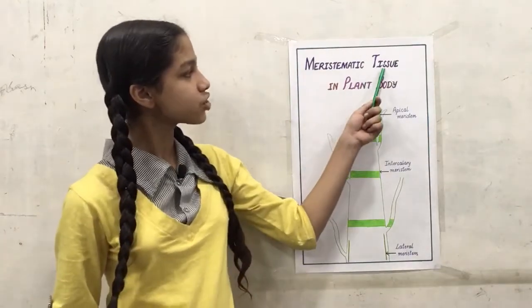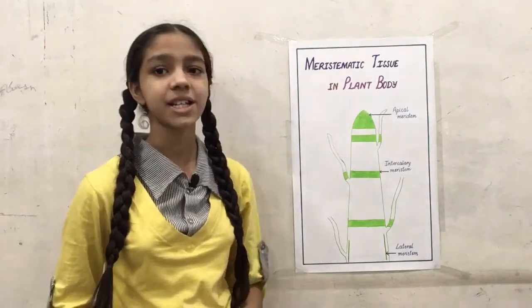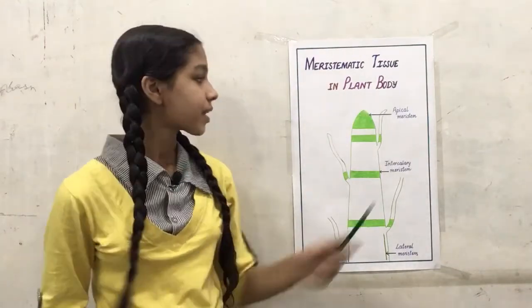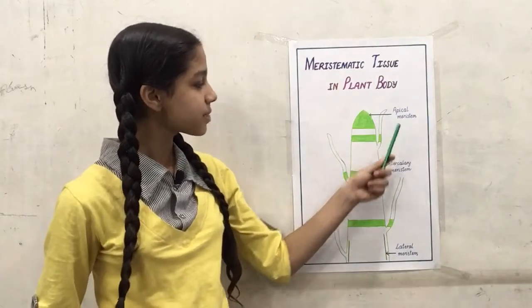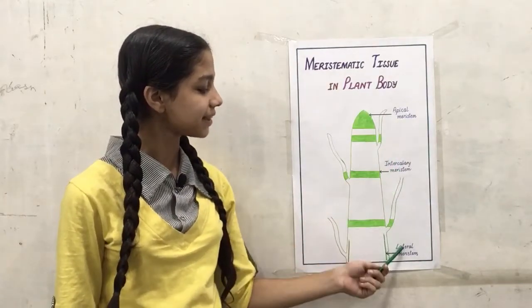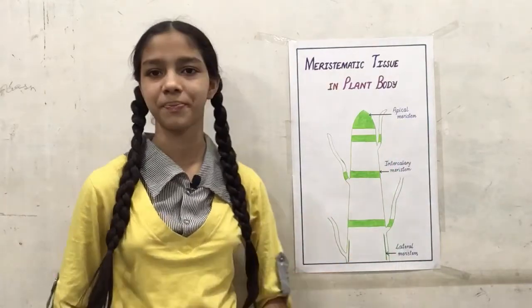Meristematic tissue is divided into three types: apical meristem, intercalary meristem, and lateral meristem.